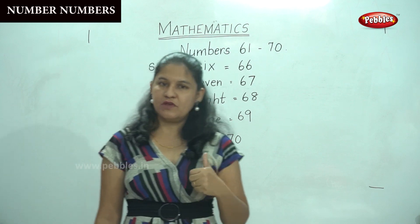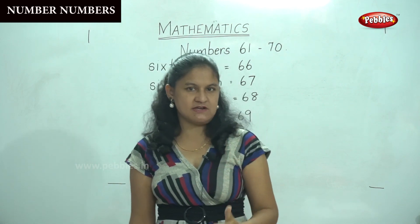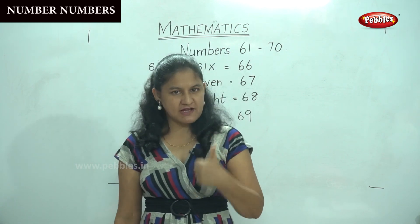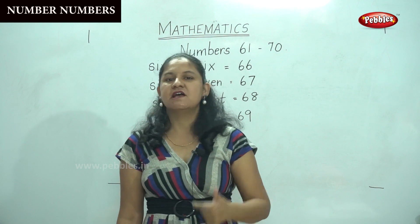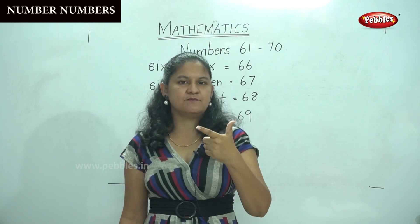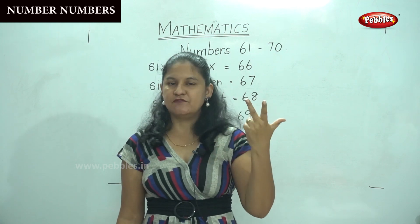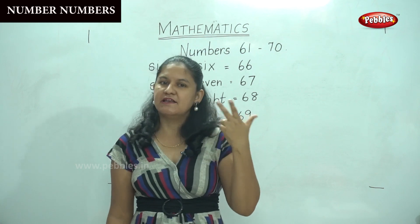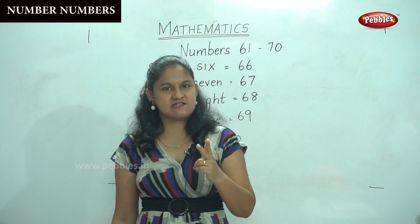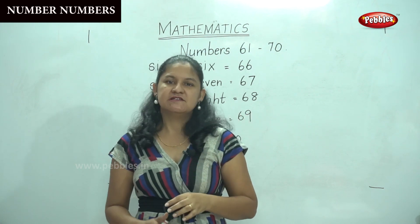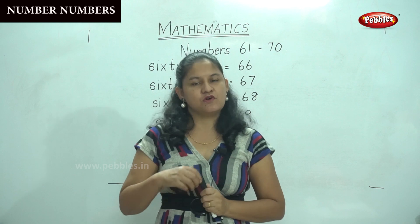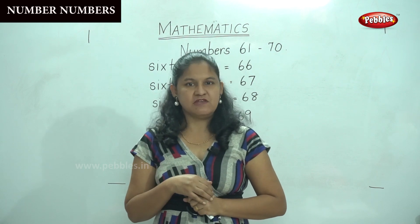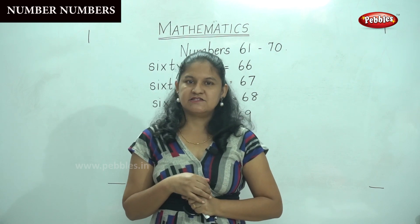So now we have learnt numbers from 61 to 70. We have learnt to write the numbers, we have learnt to identify the numbers, and we have also learned the number names for numbers 61 to 70. So I hope you are all coming along with me. Understood children?